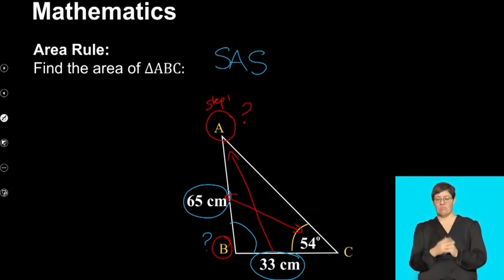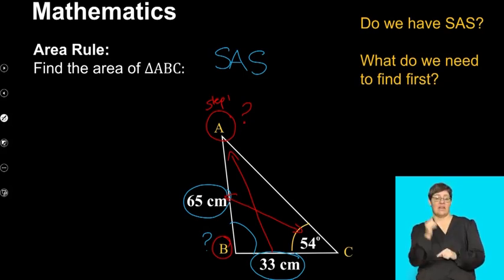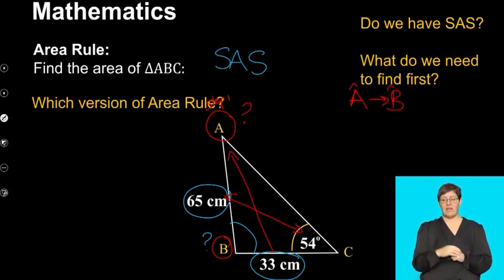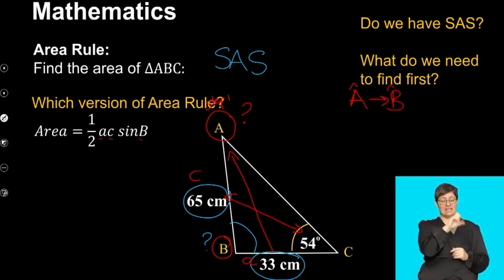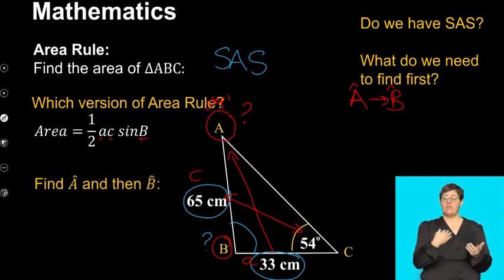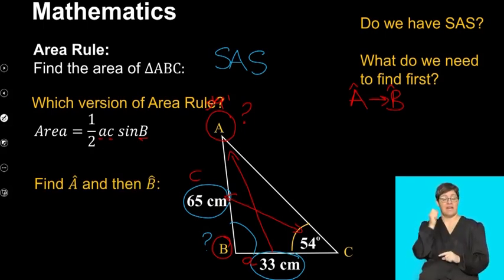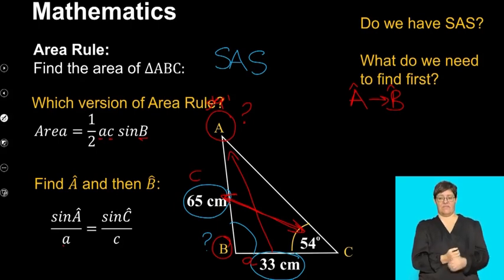So let's just recap what we're going to do. We don't have side, angle, side yet — we need to find A first, and then once we've found angle A, we need to find angle B. Because this side is little c and this side is little a, we're going to use the version of the area rule with AC and the included angle B. So let's first find A using the sine rule. Because we're finding A, we're going to start with sine A over little a, which equals sine C over C, since our full pair is the pair with the Cs.